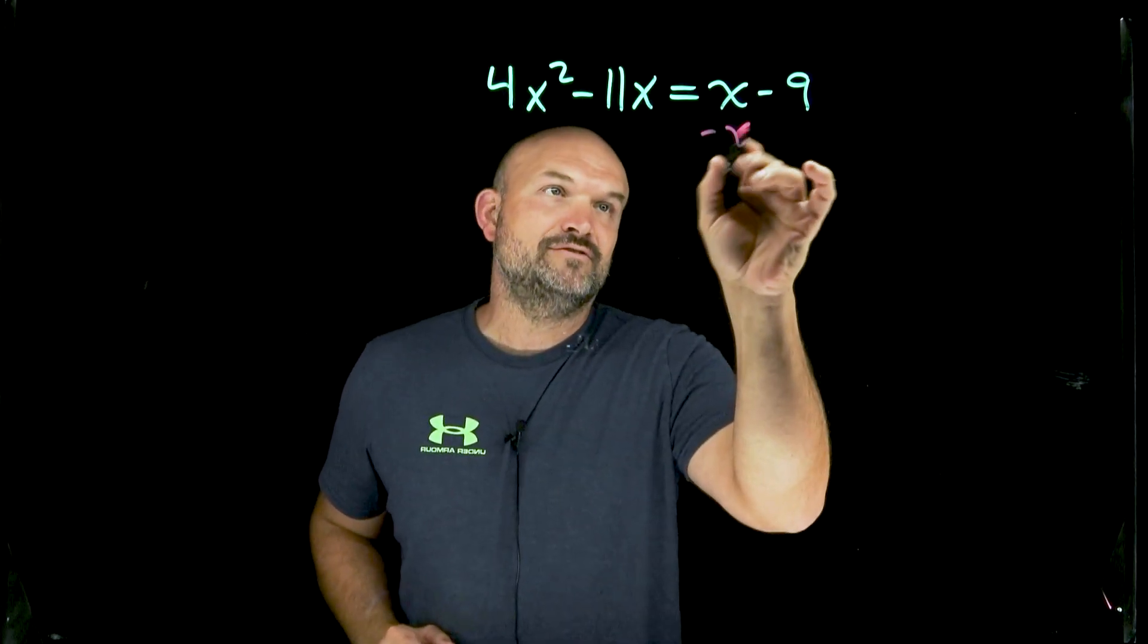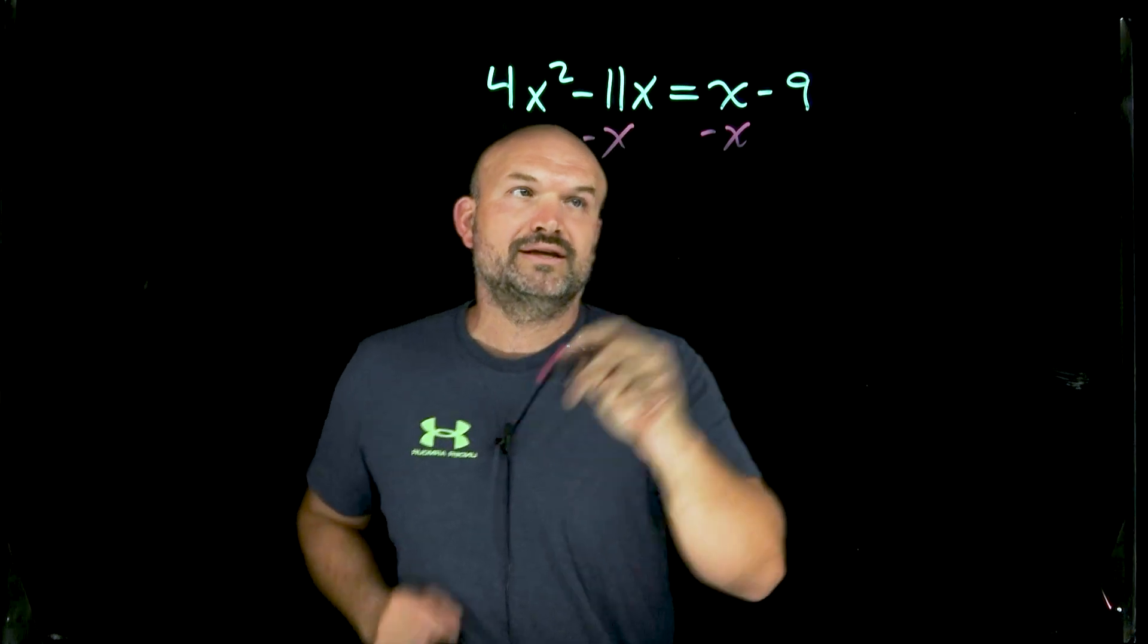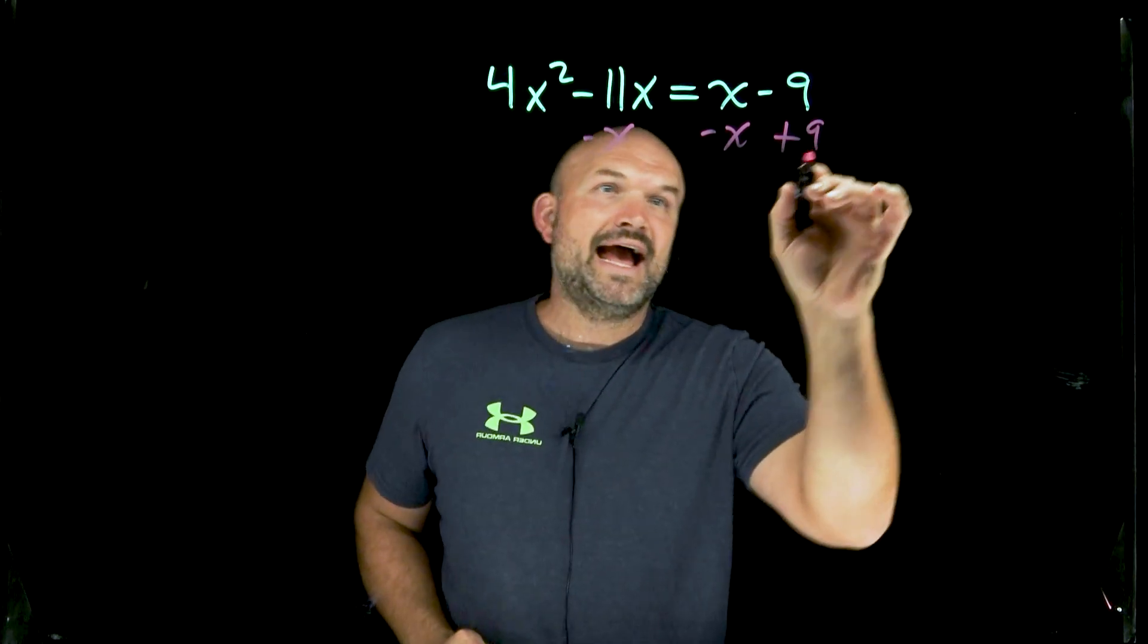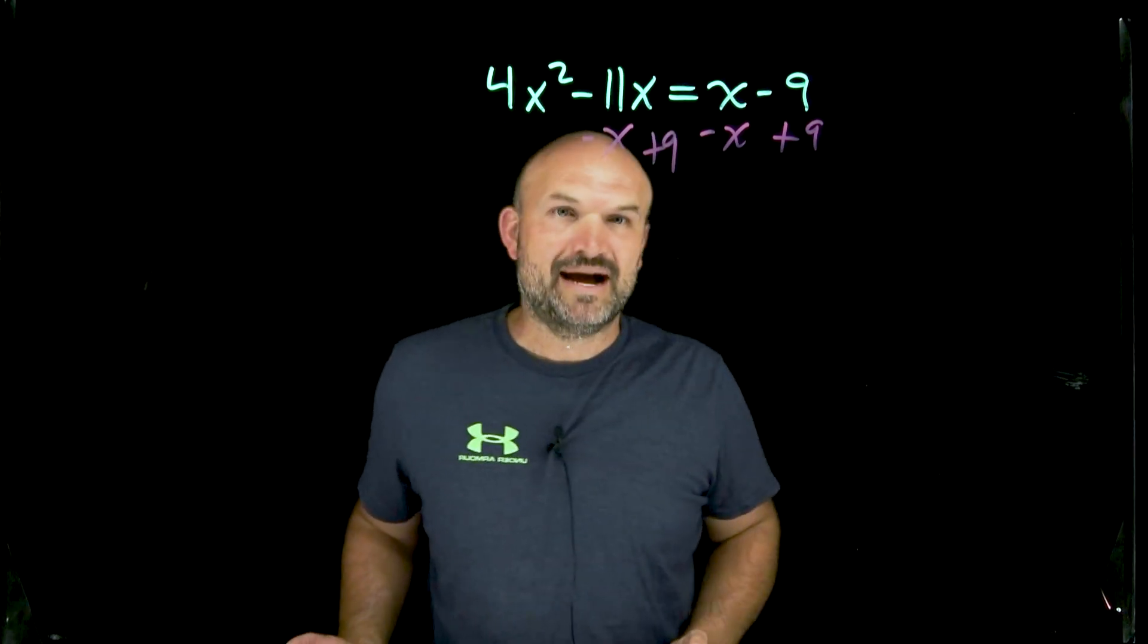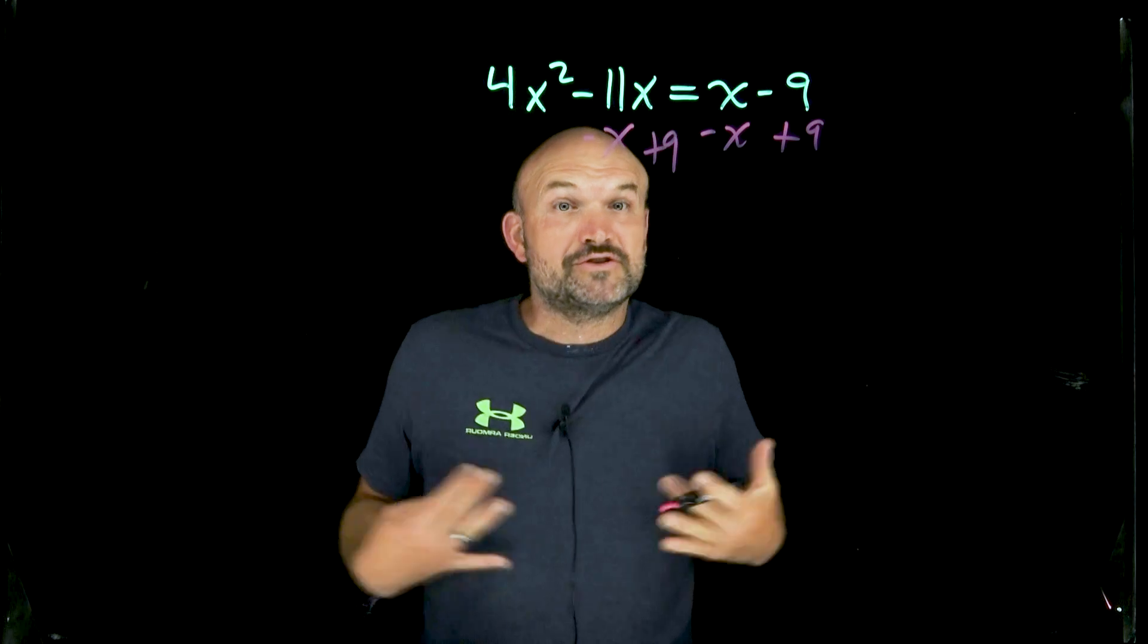To do that, I'm just going to use my inverse operations and properties of equality. So I'm going to subtract an x on both sides. I'm going to add a 9 on both sides. Now, I didn't subtract the x under the 11x by mistake. I did that on purpose because those are like terms.